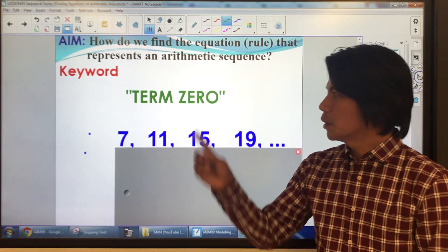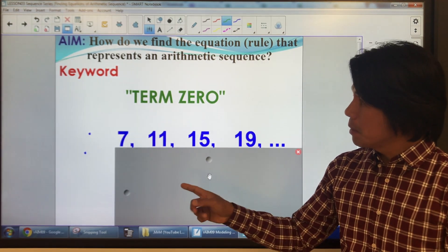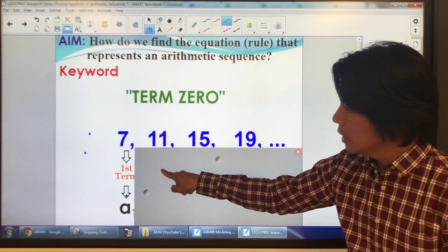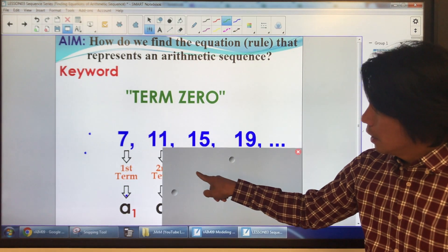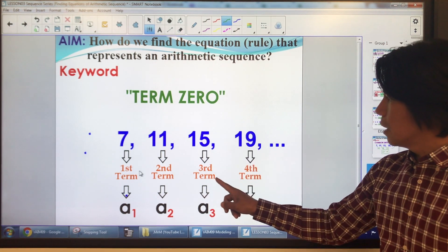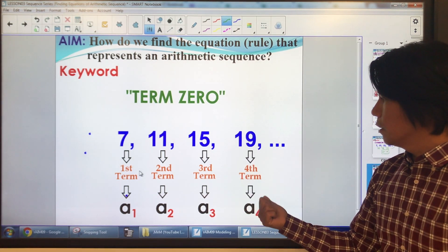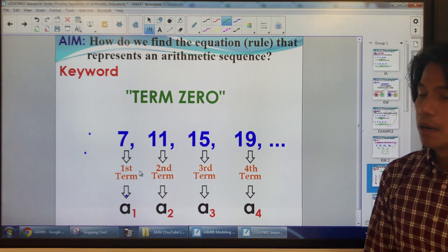Now, let's have another keyword. Term 0. What do we mean by that? Let's do a brief recall. Remember, 7 is your first term, or A sub 1. 11 is A sub 2, second term. And 15 and 19 are both the third and the fourth term, respectively, or A sub 3 and A sub 4, respectively.